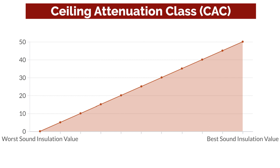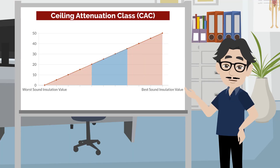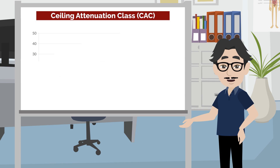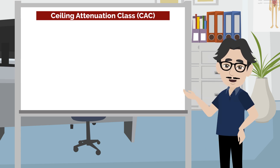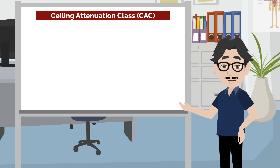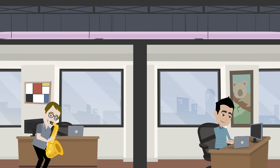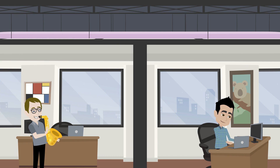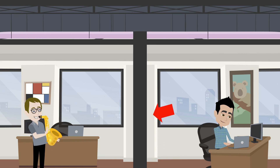CAC values for acoustic ceiling tiles are usually between 20 and 35. If you want less sound transmission between rooms traveling through the plenum, there are some things you can do to prevent this. You can choose ceiling tiles with higher CAC and NRC values, you can add sound attenuating batt insulation above the ceiling tiles, and you can also install walls between rooms to run from floor to roof deck.